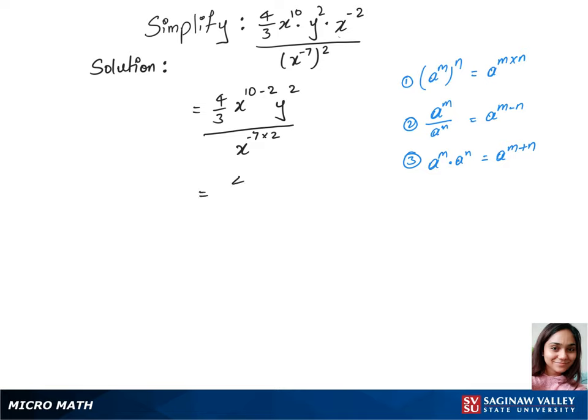over 3, and x to the power 10 minus 2 is 8, and y power 2 remains the same over x power of minus 7 times 2, which is 14. Now we can write this as 4 over 3. We have x